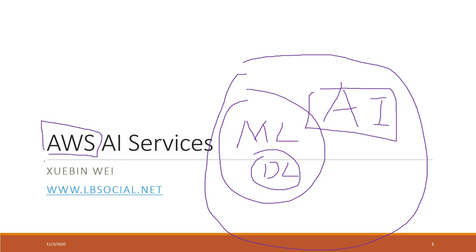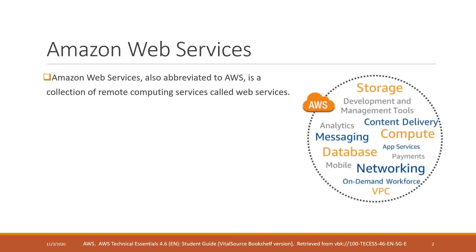AWS has a lot of AI services available. Many of those services do not require any programming experience and do not even require knowledge of machine learning, so they are pretty easy to use and very powerful. However, if you know programming and machine learning, you can also design your own AI services. AWS — Amazon Web Service — is probably right now the most powerful and most popular cloud computing service.